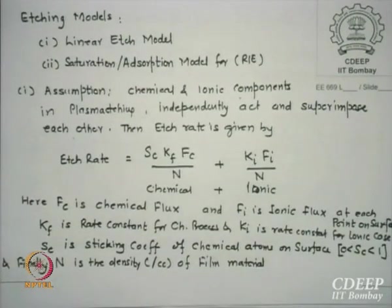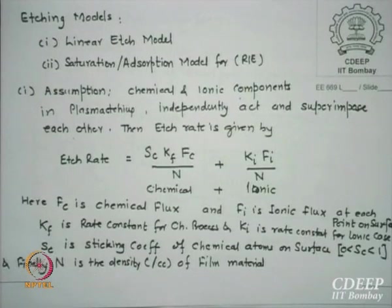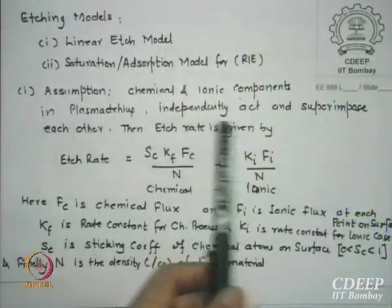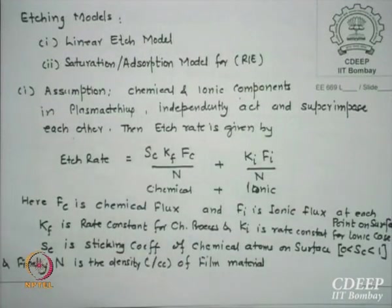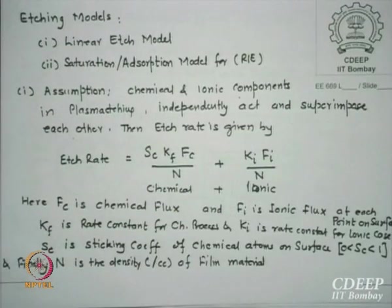The two models for modeling etching are the linear etching model and the saturation adsorption model — both for RIE. The linear etching model assumes something. We have two mechanisms — chemical and ionic — and our assumption is that during etching they react independently. They do not interact with each other. One is happening, the other is also happening and they superimpose. So we say chemical and ionic components in plasma etching independently act and superimpose in the result. The etch rate can be given as one term due to chemical reaction and one due to ionic bombardment.